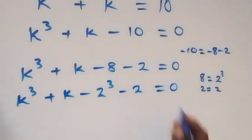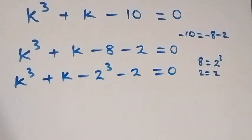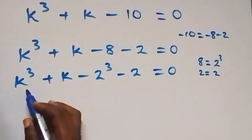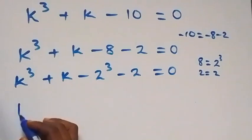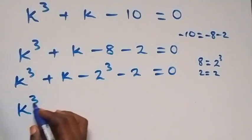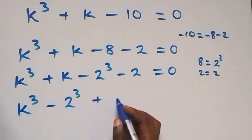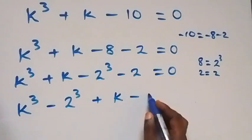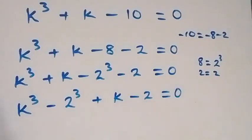Now it goes to 0 from here, like this. Here, let's group the powers of 3 together. This gives us k raised to power 3 minus 2 raised to power 3, then plus k minus 2 equals to 0.